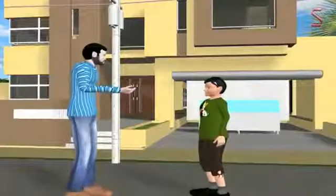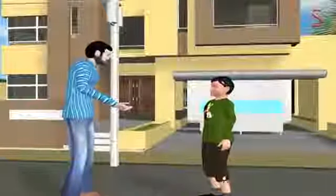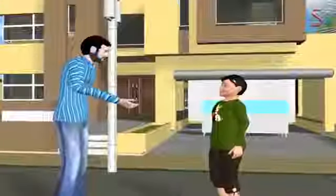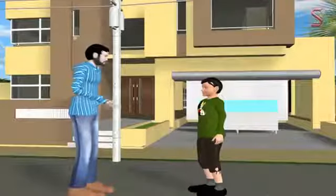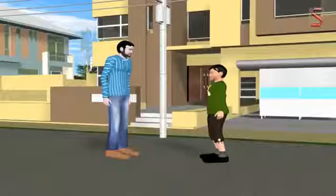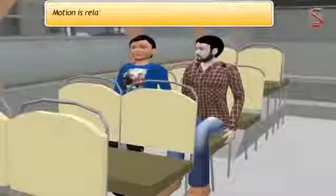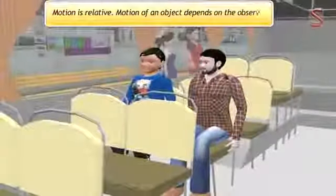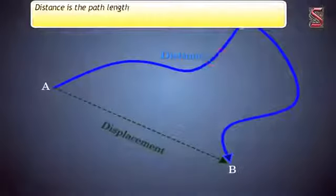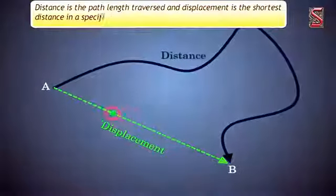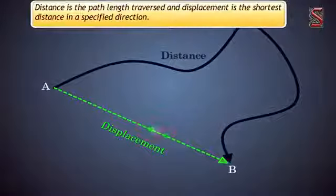We now come to the end of this lesson on motion. In summary: motion is relative; the motion of an object depends on the observer. Distance is the path length traversed, and displacement is the shortest distance in a specified direction.